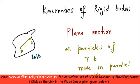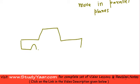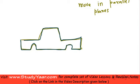This is basically applicable when you have a rigid body which is symmetrical. So let's just say that you have a car. We are assuming that the car is symmetrical about this plane. So if you can understand the motion of particles in this plane, then you can understand the motion of the entire car.